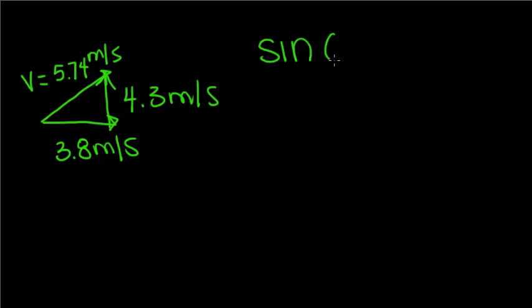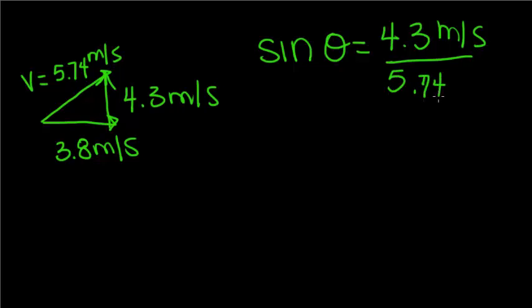Now, we're going to use sine of theta is equal to 4.3 meters per second over the hypotenuse, which we found is 5.74 meters per second. We have to use this number that we find, which ends up being 0.749.